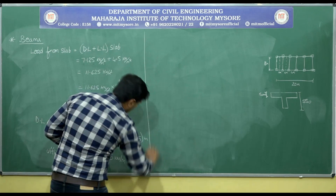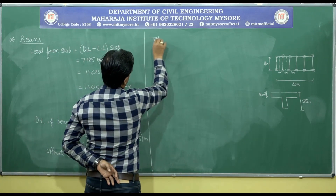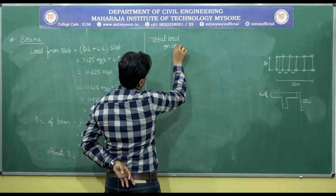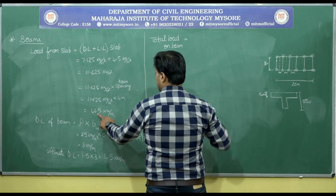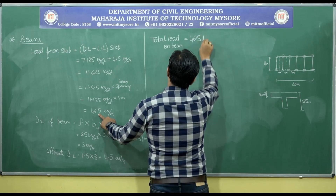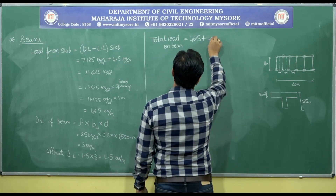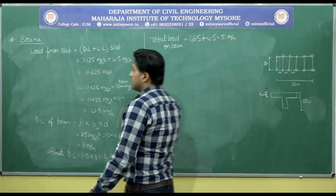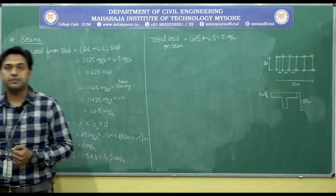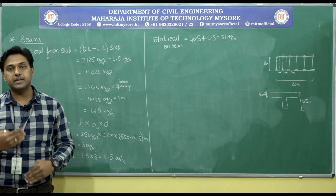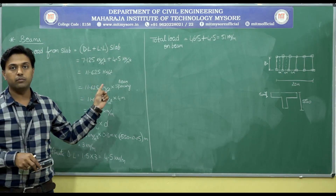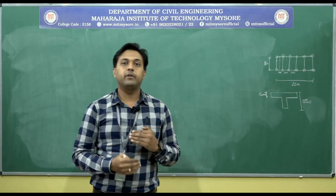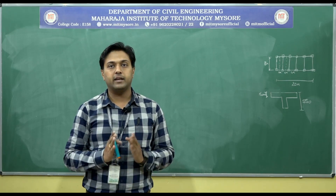Total load on beam = load from slab + dead load of beam = 46.5 + 4.5 = 51 kN/m. This completes the load calculation. To continue further with the design, I need to calculate the bending moment. The bending moment calculation will be done in the next class. For time being, we will wind up. Thank you.